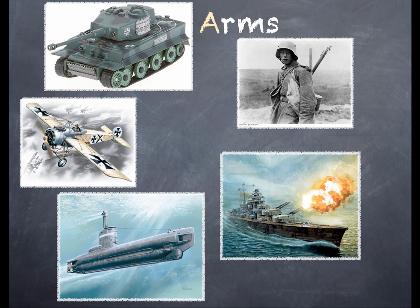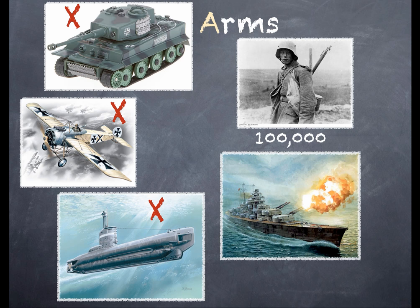What are the limitations placed on German arms? Germany is to be allowed no tanks or armoured vehicles of any kind. She cannot have any military aircraft whatsoever. She was to be allowed no U-boats - no submarines at all. The army was to be restricted to 100,000 men - quite a small army compared to the armies of millions fielded during the First World War. And the navy was to be restricted to just six battleships.